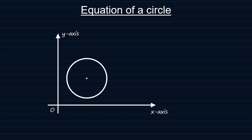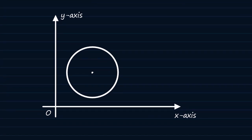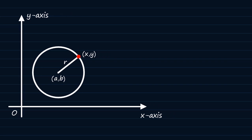Consider a circle here on the Cartesian plane. The circle has a center of coordinates (a, b) and a radius of R. XY is a general point representing any single point found on the circumference of this circle. Using this general point and the center (a, b), we can say the square root of (x minus a) squared plus (y minus b) squared should give us the radius R.